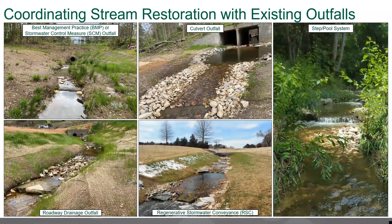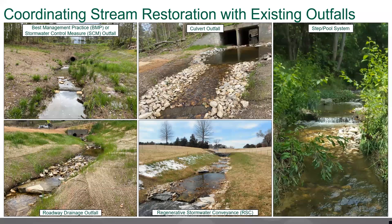Here are some examples of completed outfall projects. Off to the left, one is outfalling from a BMP pond or road drainage. In the middle, a culvert outfall with a plunge pool for the large drainage area. Below that, more intermittent road drainage with added rock. Off to the right, a step pool system where the steep slope allowed us to add steps as the water moved down. I'm going to pass it off to Travis.